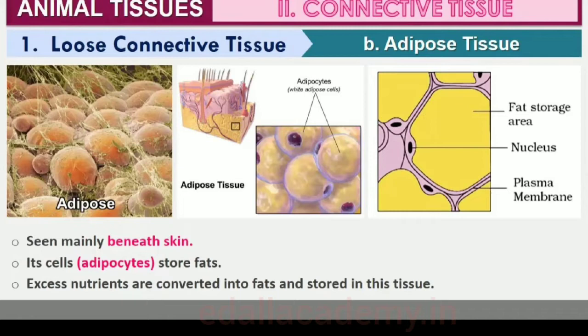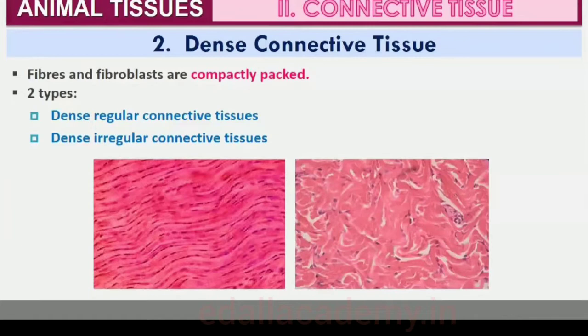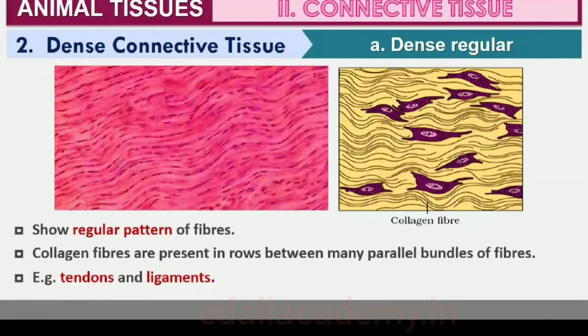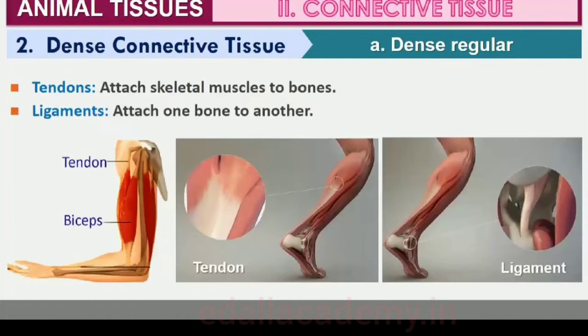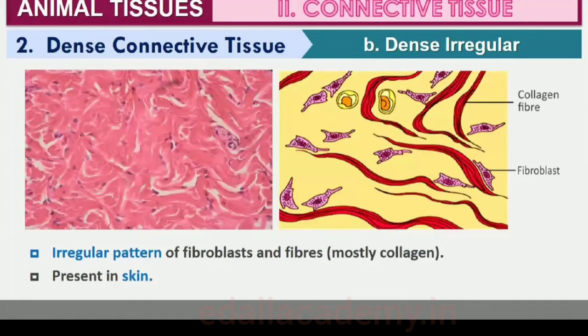Fibers and fibroblasts are compactly packed in the dense connective tissues. Orientation of fibers shows a regular or irregular pattern and are called dense regular and dense irregular tissues. In the dense regular connective tissues, the collagen fibers are present in rows between many parallel bundles of fibers. Tendons, which attach skeletal muscles to bones, and ligaments, which attach one bone to another, are examples of this tissue. Dense irregular connective tissue has fibroblasts and many fibers, mostly collagen, that are oriented differently, and this tissue is present in the skin.